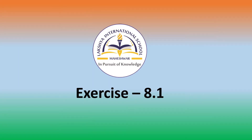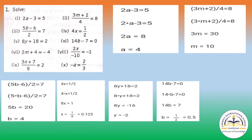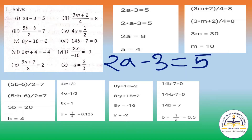On the basis of this topic we will solve Exercise 8.1, Question 1: solve the following. The first question is 2a minus 3 equals to 5. Now for what we have to do — this minus 3 you have to transfer to the RHS, that is to the side with 5.